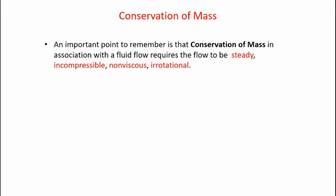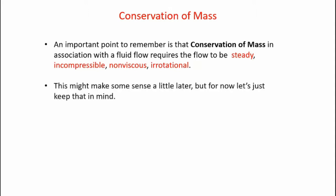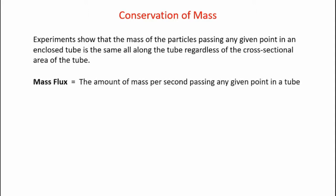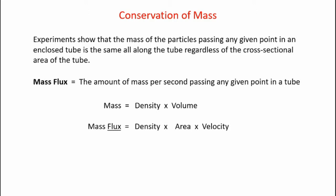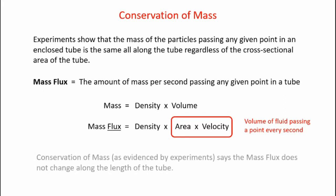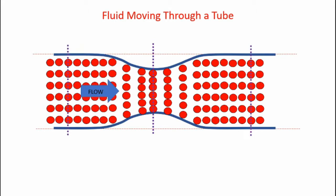An important point to remember is that conservation of mass in association with fluid flow requires the flow to be steady, incompressible, non-viscous, and irrotational. Now let's examine the concept of mass flux. Experiments show that the mass of particles passing any given point in an enclosed tube is the same all along the tube, regardless of the cross-sectional area. Mass flux is the amount of mass per second passing any given point. Since mass is density times volume, mass flux is density times area times velocity. Conservation of mass says the mass flux does not change along the length of the tube regardless of the area.